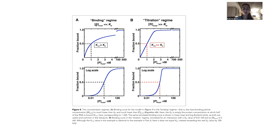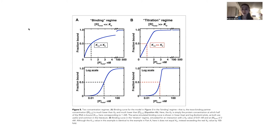When you're in this binding regime where you have R totally way below the Kd, you have a very little amount of one partner, and then you're adding a great excess of the other partner. Because there's so little of one partner, it's like the other copies of itself don't exist — it doesn't have to compete very much. It's a bit like the ideal gas law, where gas molecules can be considered independent because they're so far apart. The other ones aren't really taking away from the pool of the free binding partner.